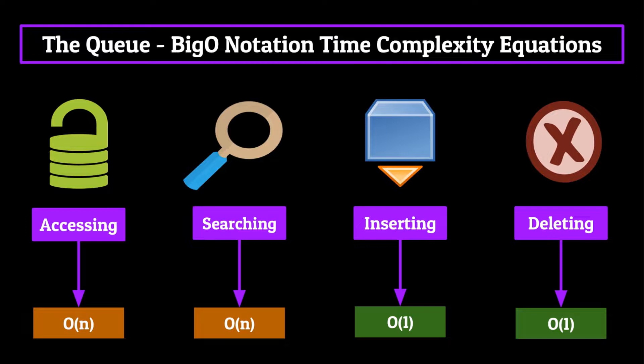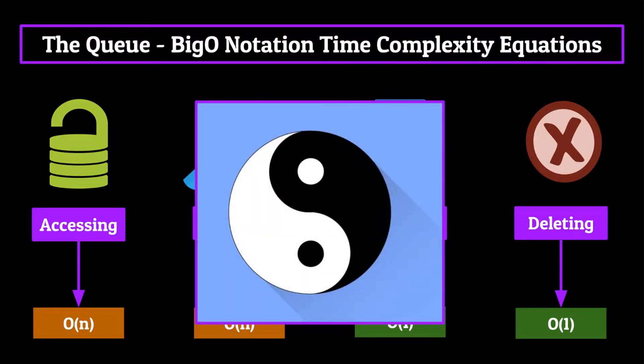And there they are in all their glory, the time complexity equations for the queue. You'll notice that they're identical to the stack, which, if you've been paying attention, is the truth for most properties of a queue. They're very much a yin and yang, one and the same type deal. You'll oftentimes see them talked about together frequently just because of how similar their functionality is.